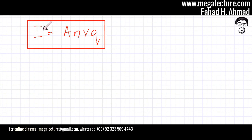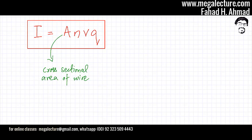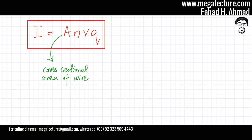So, current is equal to A, N, V, Q where the symbols A, N, V, Q represent. So, A is the cross-sectional area of the wire, whereas N is...